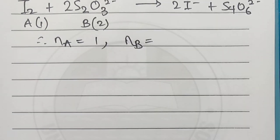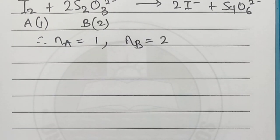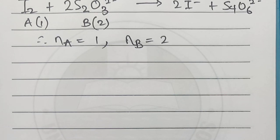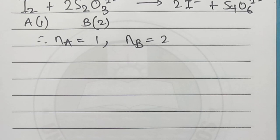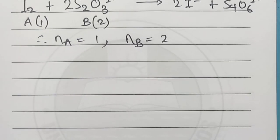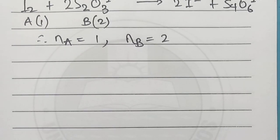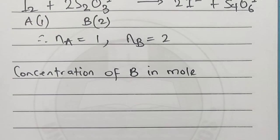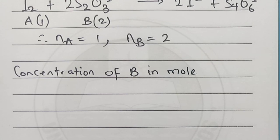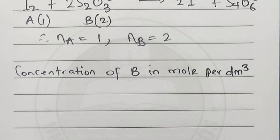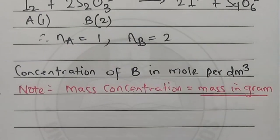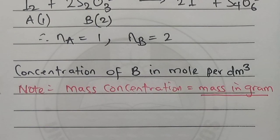Now let's go for question B(i). They say we are to calculate the concentration of B in mol/dm³. You have to note that mass concentration equals mass in grams over volume in dm³.